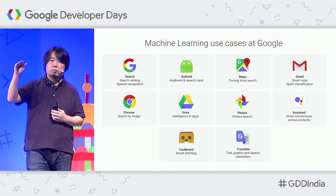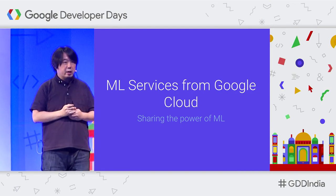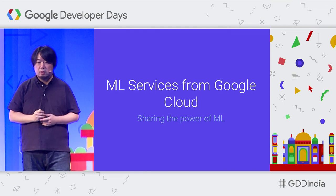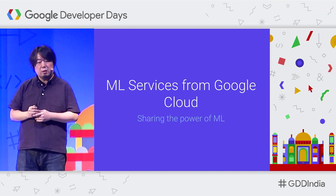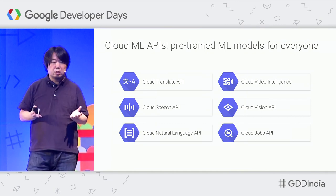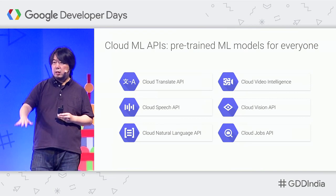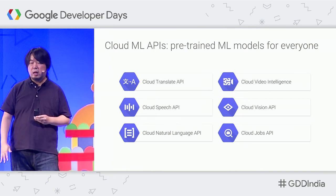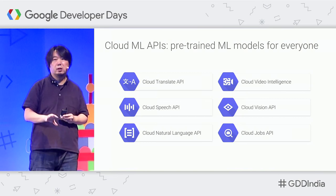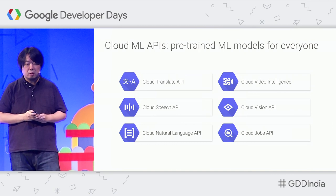Which result should be first? Which should be second? Now we are trying to externalize the power of machine learning running on Google Cloud. The first part of the product is so-called machine learning APIs, which don't require any machine learning expertise or knowledge. You can just upload your own images, audio data, or text to the API, and you'll get the result within a few seconds.